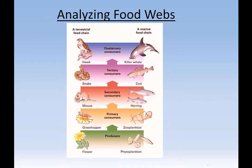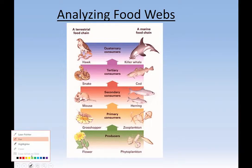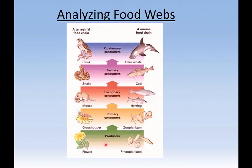I want to start with the producers first and talk about what these words mean because they're going to occur very frequently. Producers produce their own food - they're the plants. They use the sun to produce their own food. Then the primary consumers are first; they eat the plants - they're the herbivores.